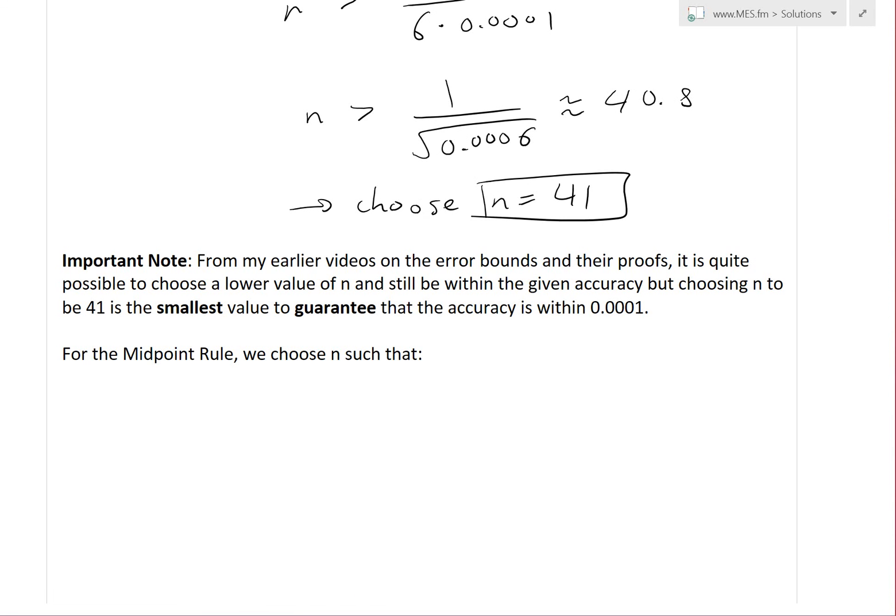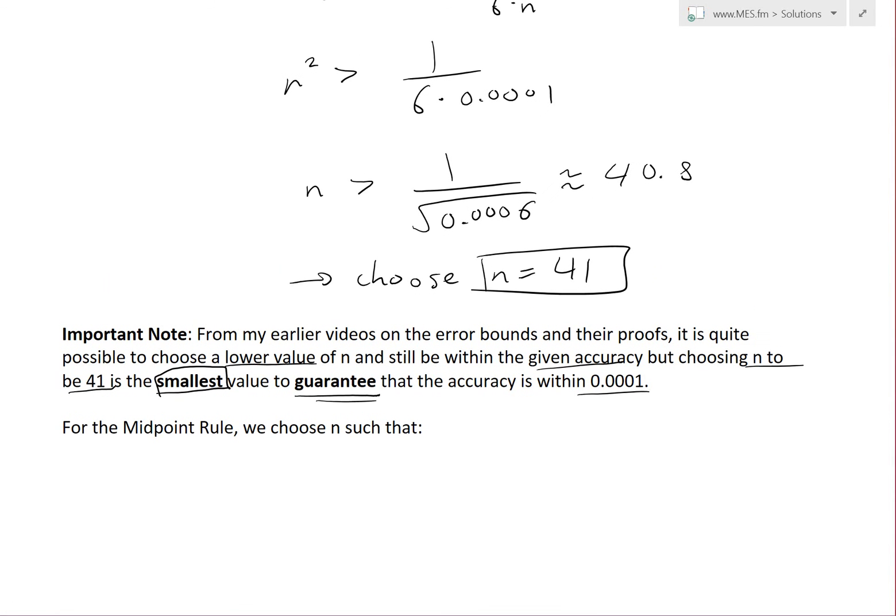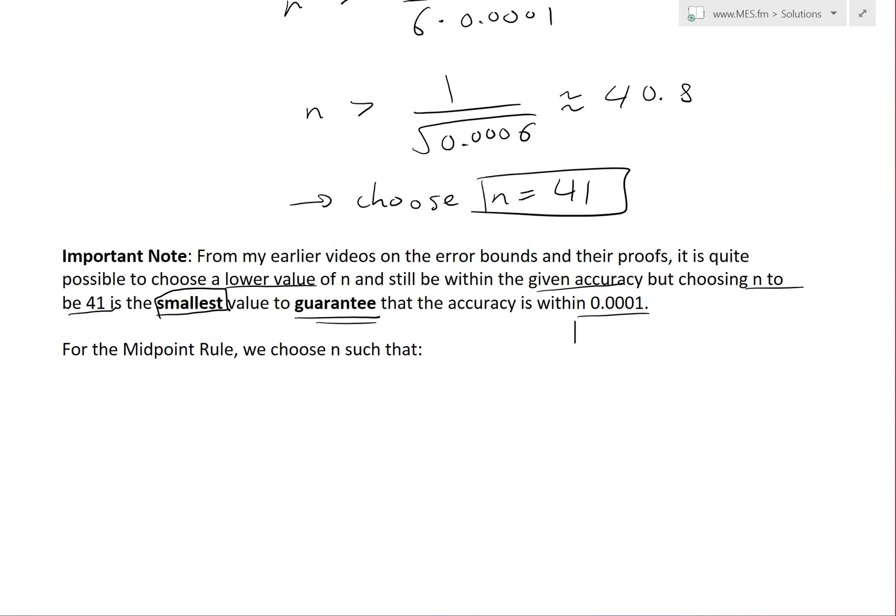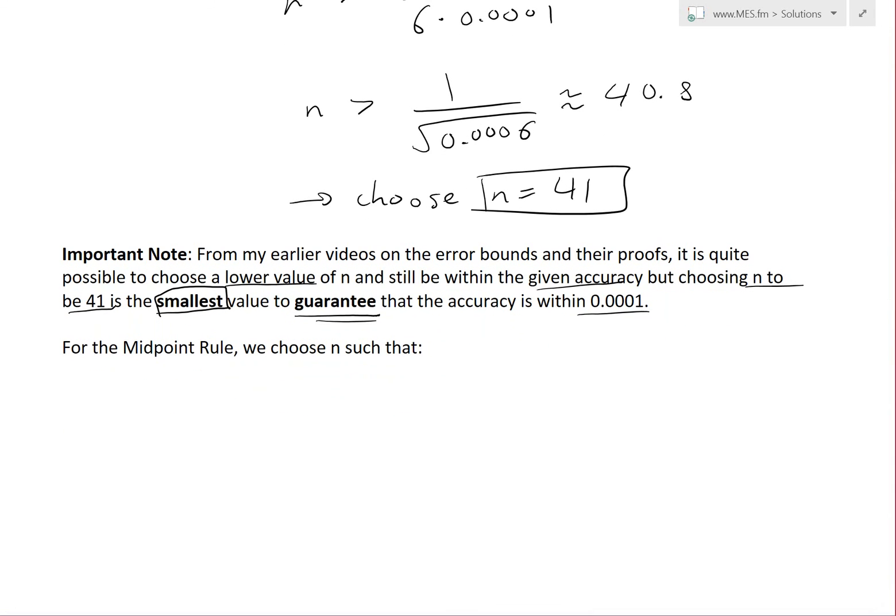An important note from my earlier videos on error bounds and their proofs: it is quite possible to choose a lower value of n and still be within the given accuracy, but choosing n to be 41 is the smallest value to guarantee that the accuracy is within 0.0001.